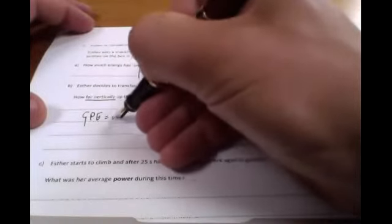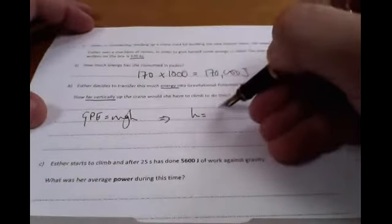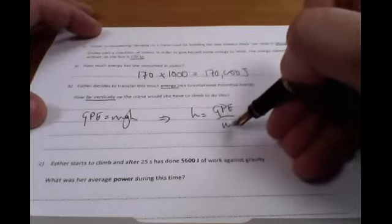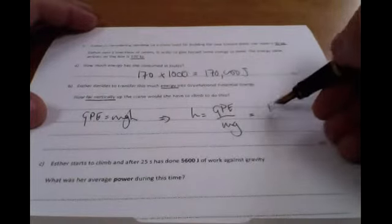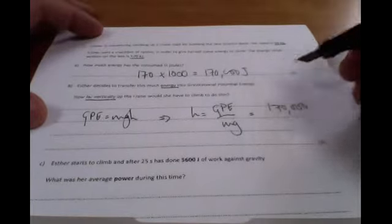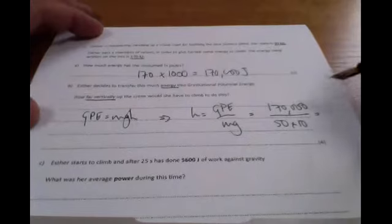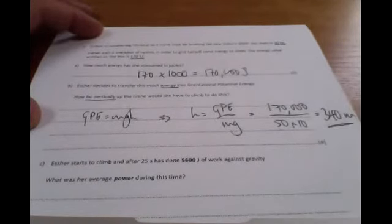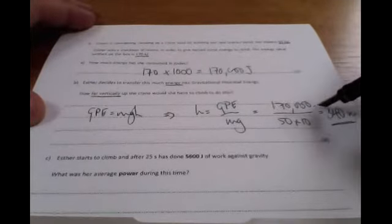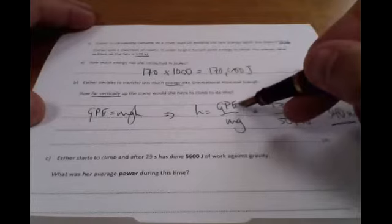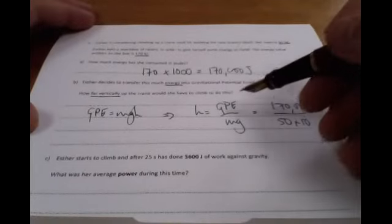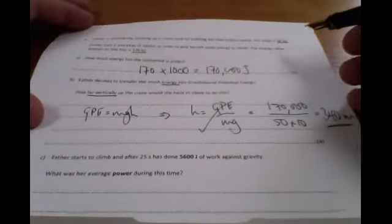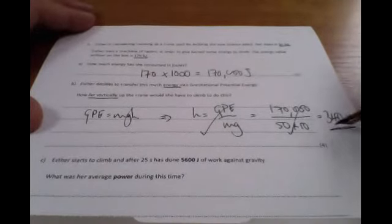GPE is MGH. H is GPE over MG. Now the energy available is going to be 170,000, given in this bit of equation here. The mass is 50 and g is 10, which leads us to 340 meters. So total energy available from the food will be converted into GPE, assuming nothing is lost to friction. So therefore we get one mark for using the right equation, one mark for the correct substitution, one mark for the answer, one for the unit.